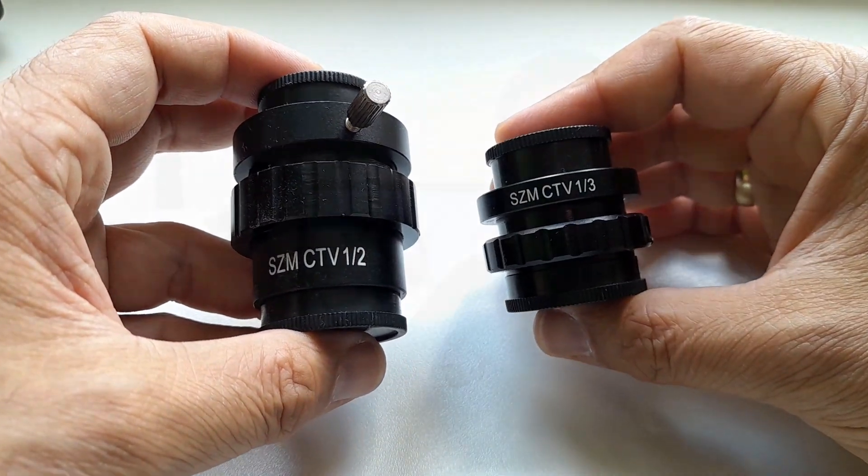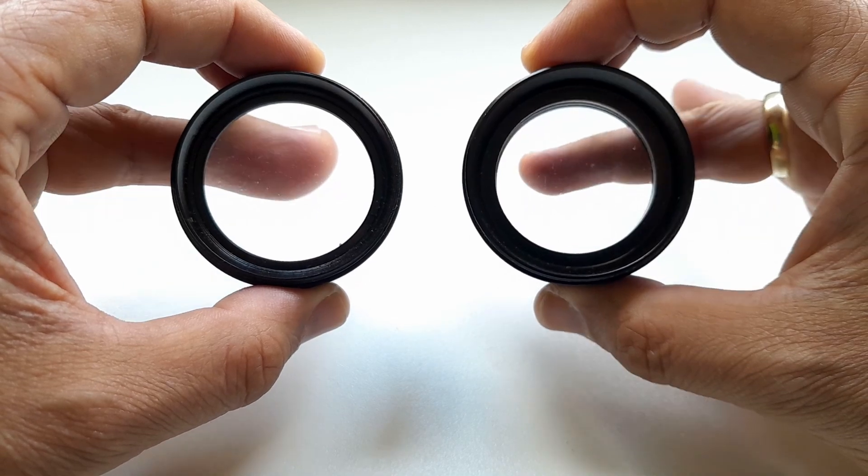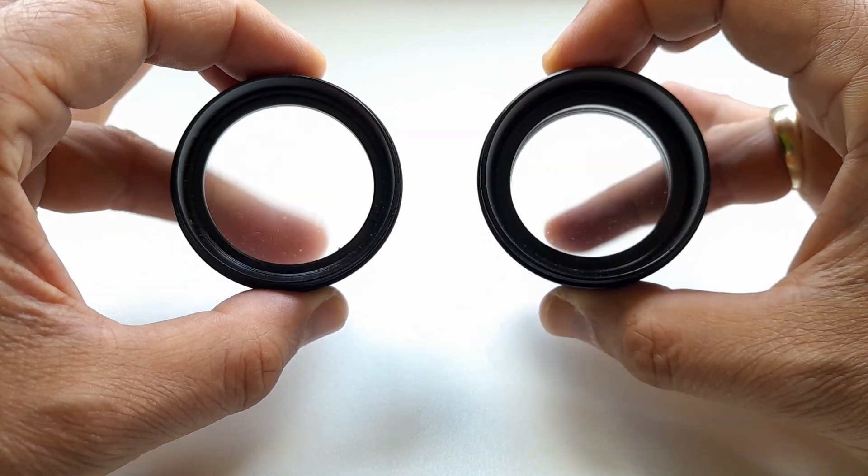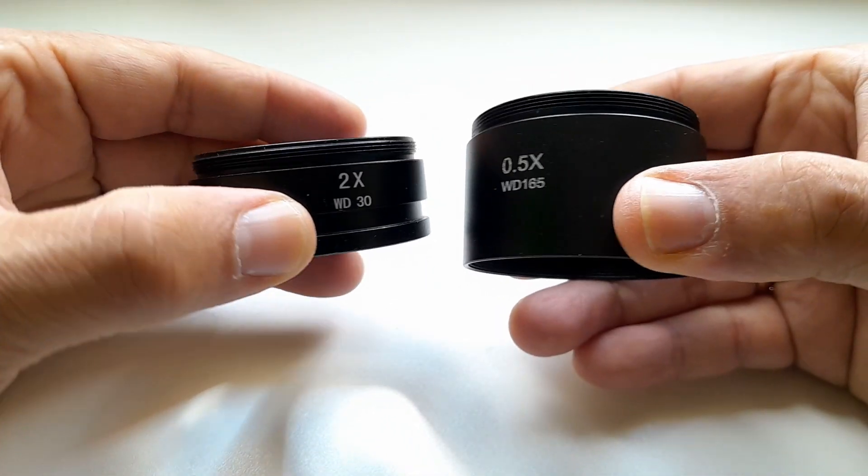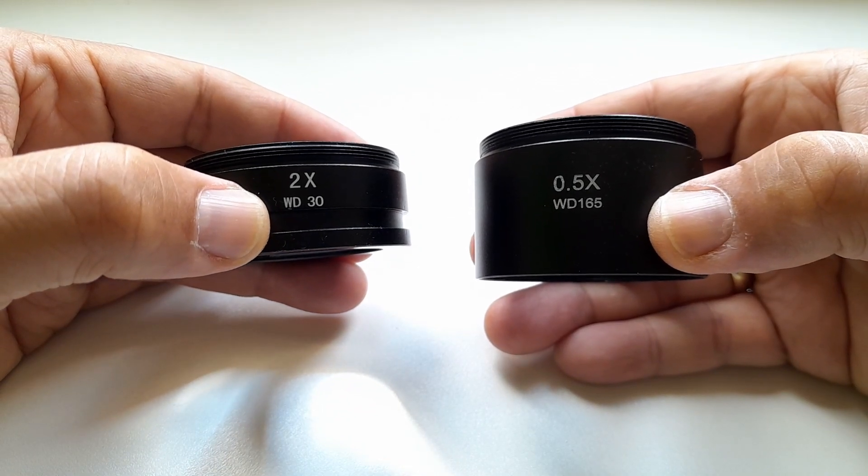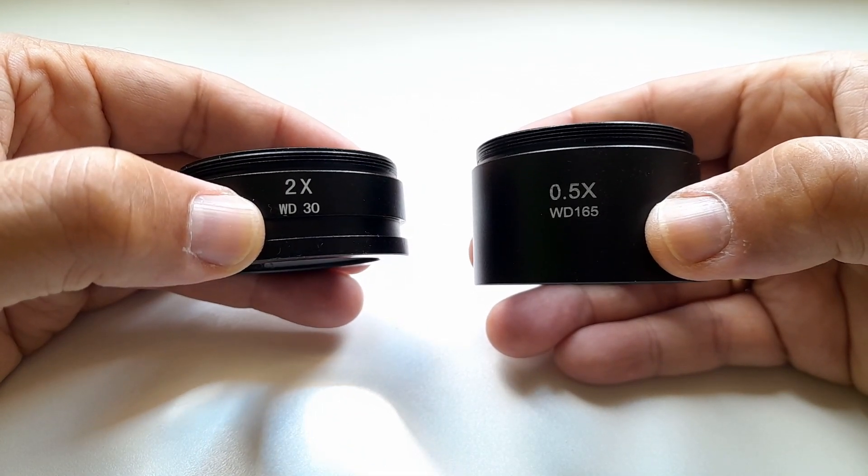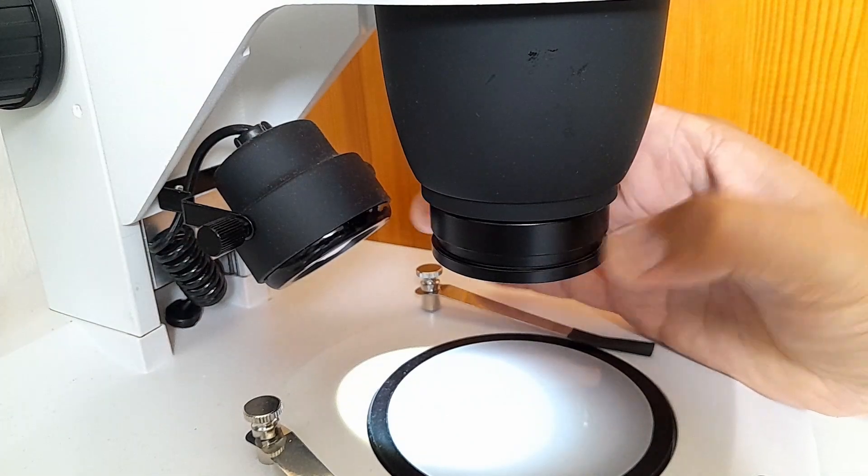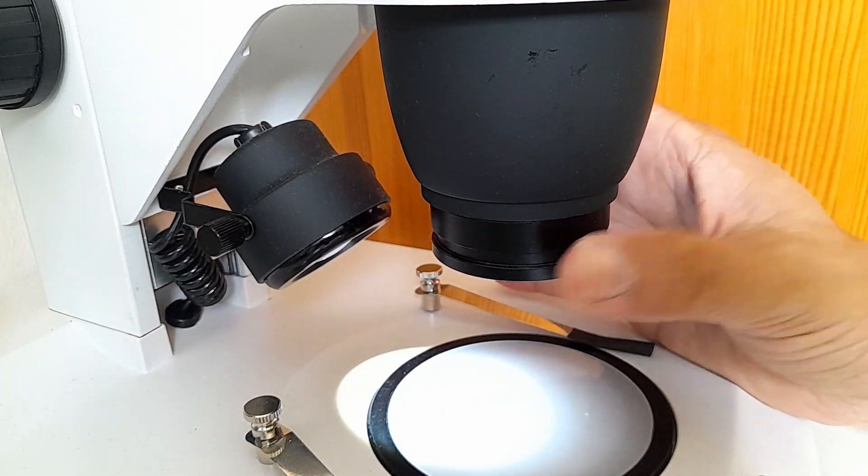I also have two Barlow lenses. You can connect them beneath the objective, and their task is to change the magnification of the microscope. The 2x Barlow increases the total magnification to a total of 110 times, while the 0.5 Barlow significantly reduces the magnification.